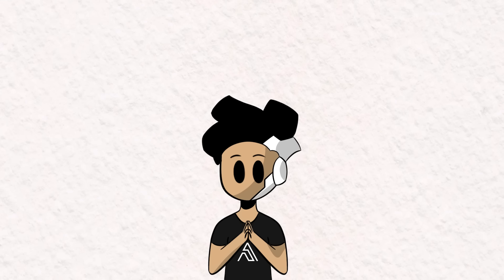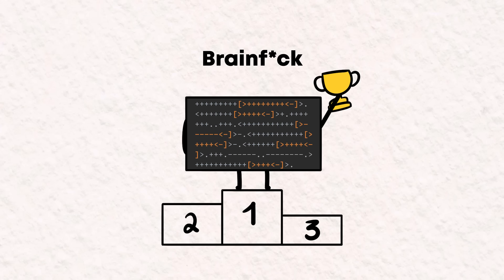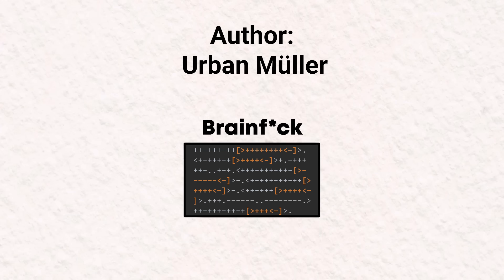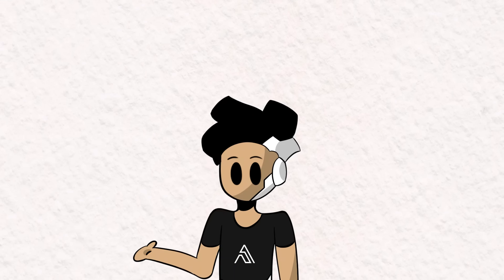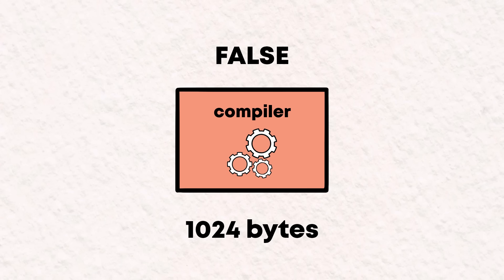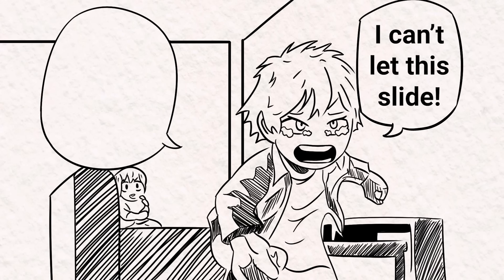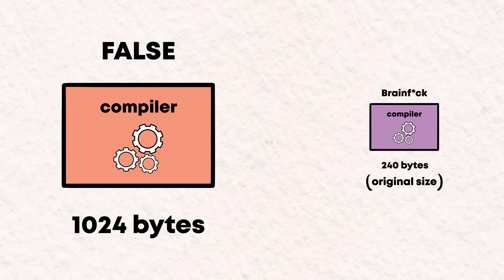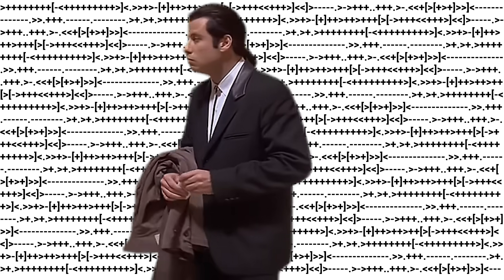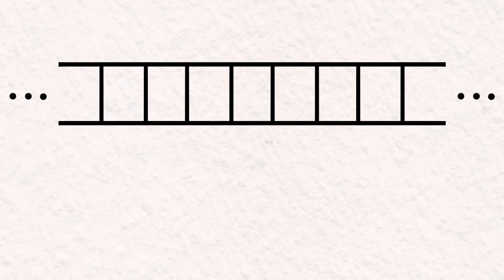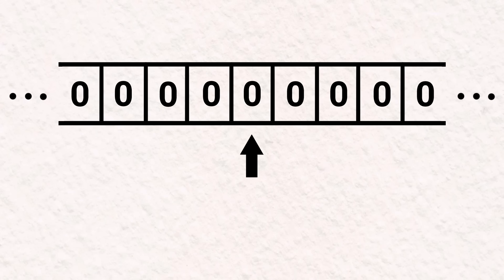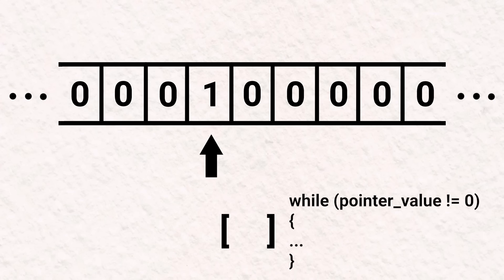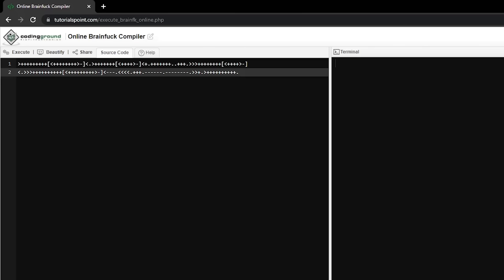A video about esolangs that doesn't mention Brainfuck would be considered a federal crime. This language is perhaps the most popular esoteric programming language out there. This esolang was created by Urban Mueller and it was designed to have the smallest possible compiler. The language was inspired by False, another esolang which had a 1024-byte compiler. Mueller saw this and managed to write a 240-byte compiler for Brainfuck. This language only uses 8 single-character commands — all other characters are ignored and should be considered as comments. Brainfuck works with a series of memory cells, each initially set to 0. There is a pointer that points to one of these cells at a time, and you can use the commands to manipulate the pointer, increment and decrement bytes, handle input and output, and declare loops. This alien-like syntax is a Hello World program with no variables, no functions, and no classes.